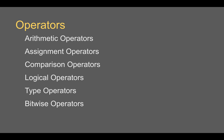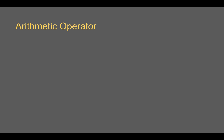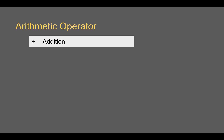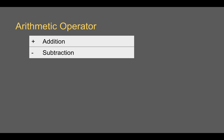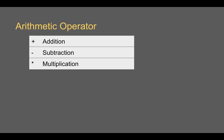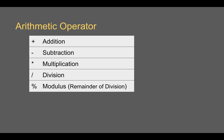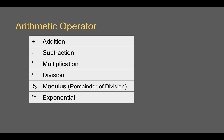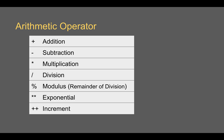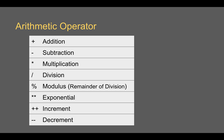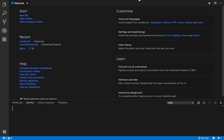Now we have all these operators. In this session I am going to start with arithmetic operators. In JavaScript, we have different arithmetic operators: addition with the plus symbol, subtraction with the minus sign, multiplication with the star sign, division with the forward slash, percentage for modulus or remainder of division, double star for the exponential operator, double plus for increment, and double minus for decrement.